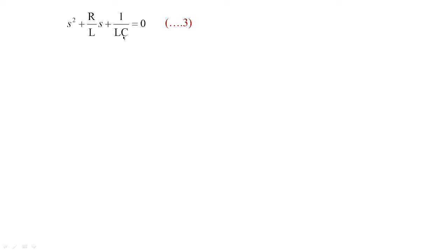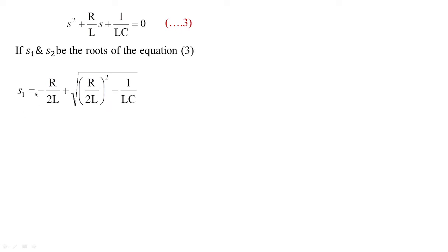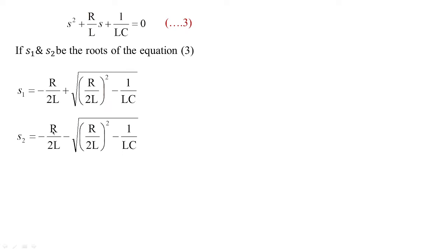We are going to take equation 3 and find its roots. S1 and S2 are the roots of this equation. Using the quadratic formula (−b ± √(b²−4ac)) / 2a, we get S1 = −R/(2L) + √[(R/2L)² − 1/(LC)] and S2 = −R/(2L) − √[(R/2L)² − 1/(LC)]. These are the two roots of equation 3.